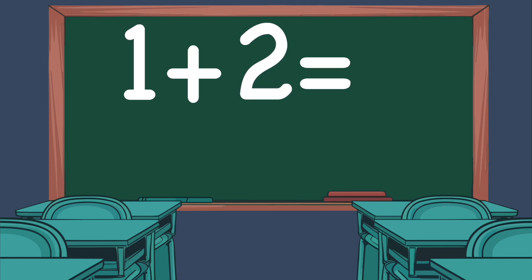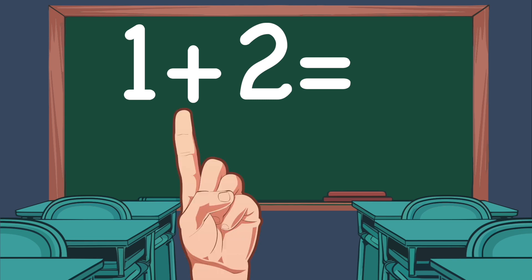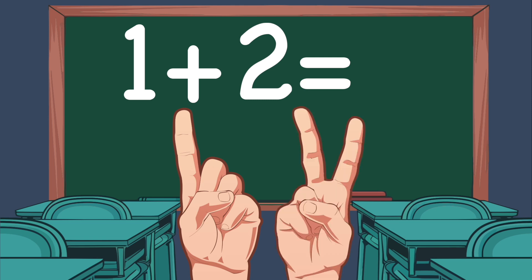How do we solve 1 plus 2? Let's use our fingers. On our left hand, we show 1 finger. On our right hand, we show 2 fingers. Now let's count how many fingers we have in total: 1, 2, 3. So 1 plus 2 equals 3.